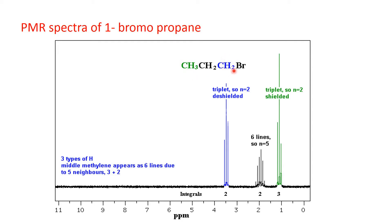Coming to the blue-colored protons attached to the CH₂Br carbon: this carbon is directly attached to electronegative bromine, so electron density around these protons is less — they are in the deshielded region. Therefore, the PMR peak will appear most downfield. The neighboring carbon has only two protons, so the NMR signal splits into three (2+1), giving a triplet at downfield. This completes the NMR spectra interpretation of 1-bromopropane.